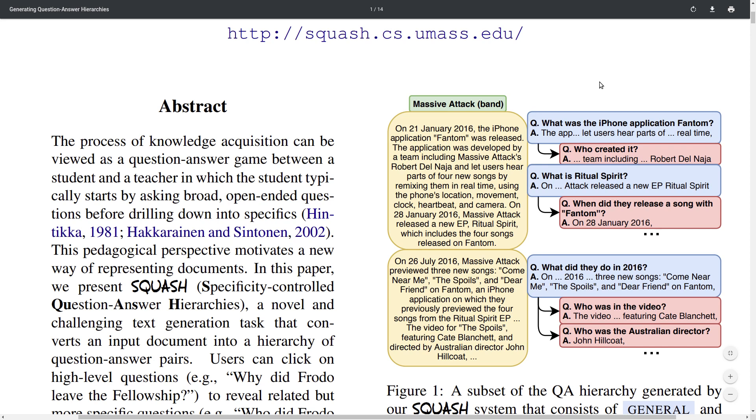So the authors proposed a pipeline which can generate these hierarchies. Given a multi-paragraph document, for each paragraph they can generate this, and this is pretty interesting because it is particularly relevant for exploring new articles, for reading them more easily. It could also be relevant for educational applications. So students could use this to learn about new things more easily and to have a more interactive learning experience because this kind of gamifies the process of learning new knowledge.